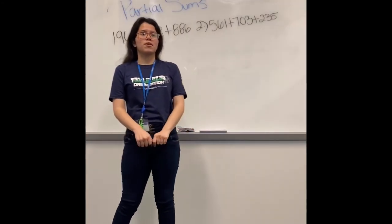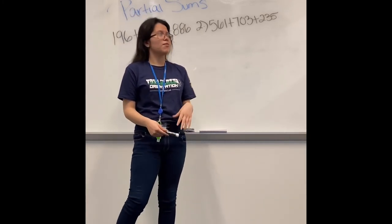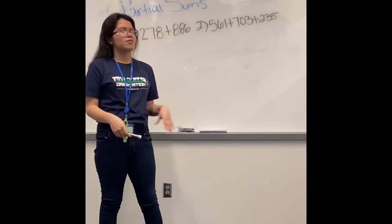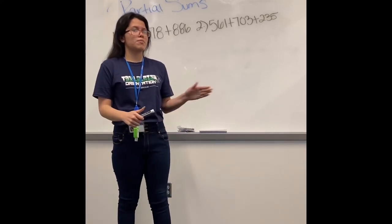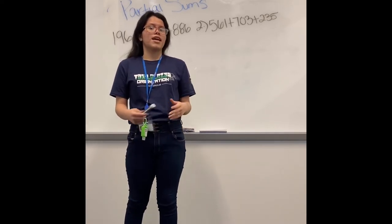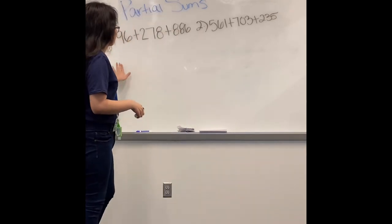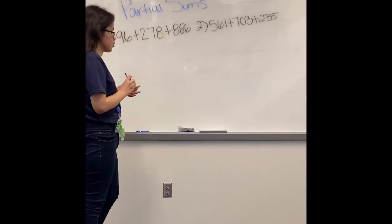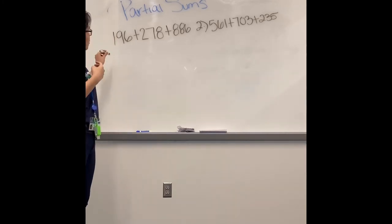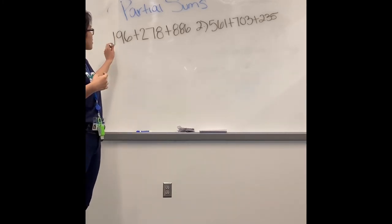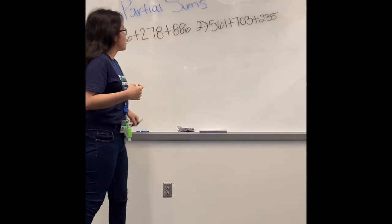Now I will be teaching you how to add through partial sums. Partial sums is the method of breaking down each number into the place values, and after breaking them down you add them up together and that will give you the answer. Now let's work one out to show you how it's done. So for example, you see 196, 278, and 886.